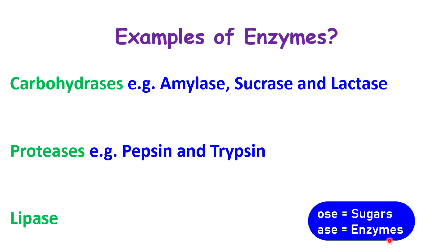Before we go any further, I want to give some examples of enzymes. Three broad categories of enzymes — even though there are many enzymes in our bodies — are what we're going to focus on today. We have those called carbohydrases; an example of that will be amylase, sucrase, lactase, and many more. We also have proteases, and two examples here are pepsin and trypsin. We also have lipase.